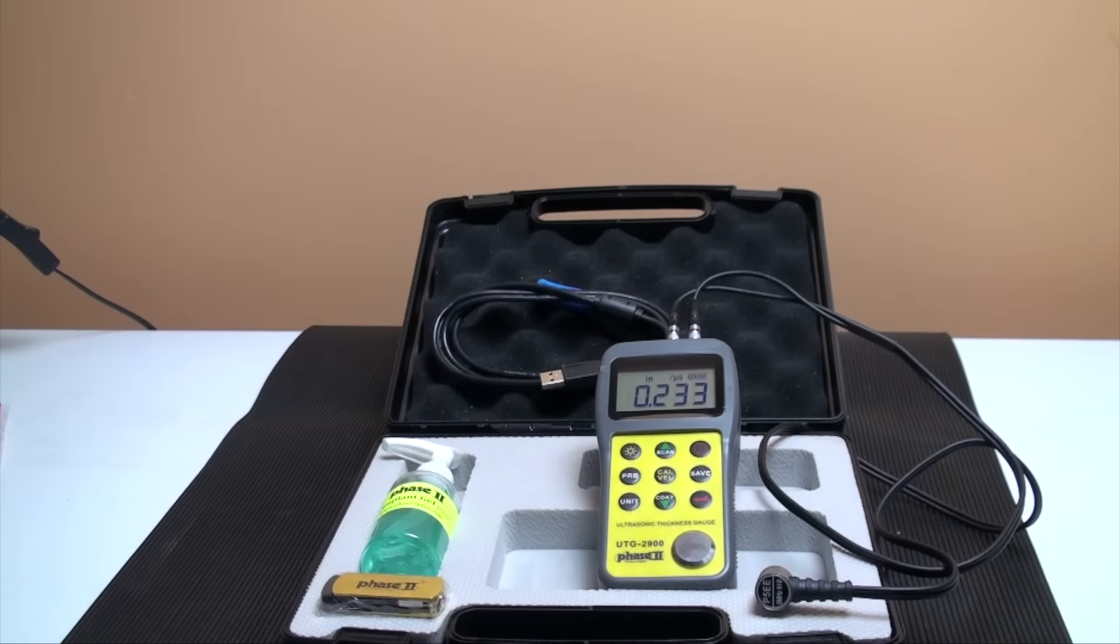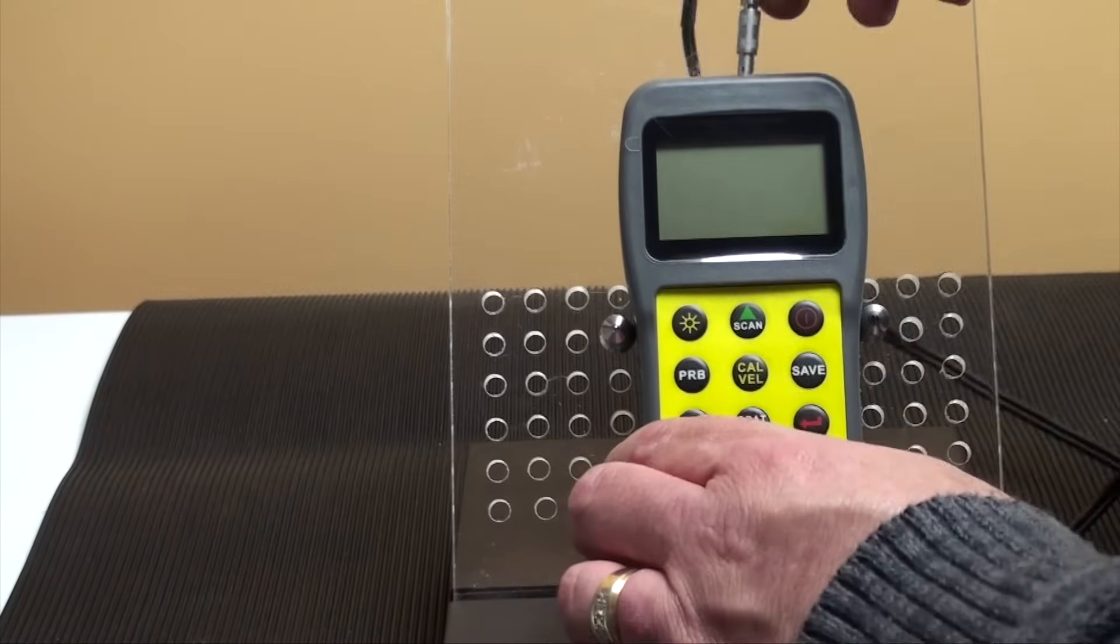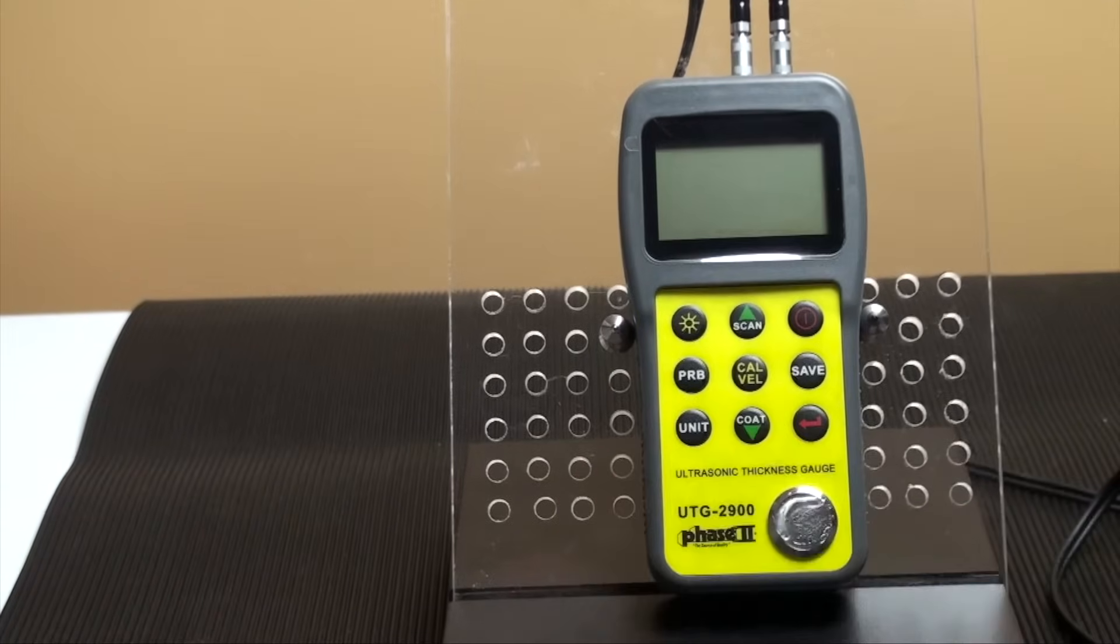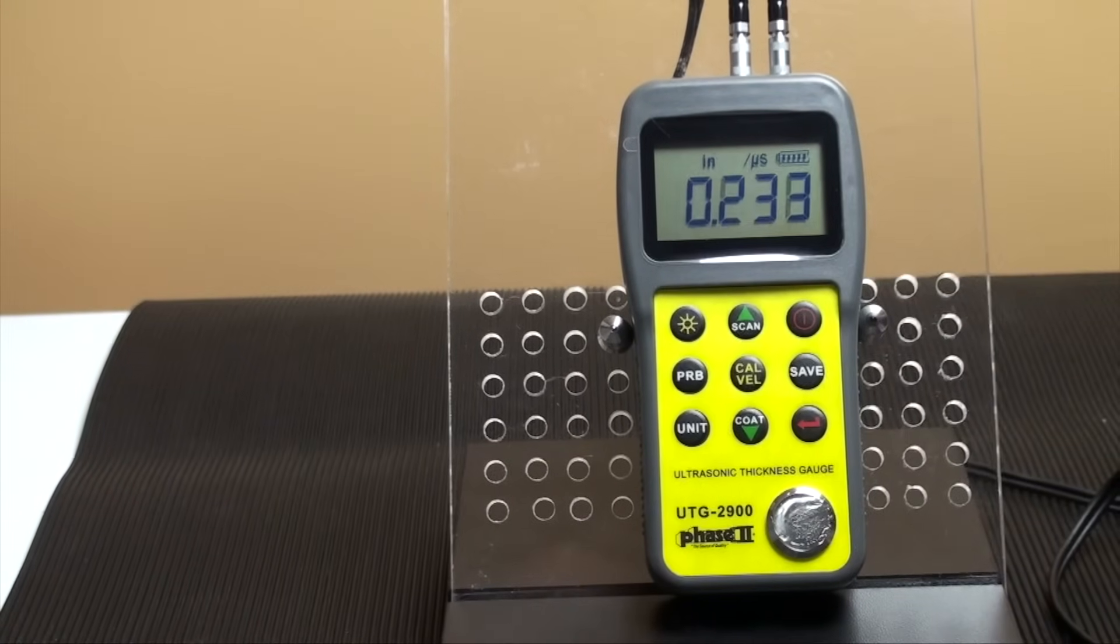Now, let's move over to the operation of the UTG-2900 and see how easy it is to utilize the different functions, taking tests and obtaining results. To begin, insert the plugs of the transducer into either of the plugs in the gauge. Press the power button top right to bring up the interface screen. You can power down the unit by pressing the same button.